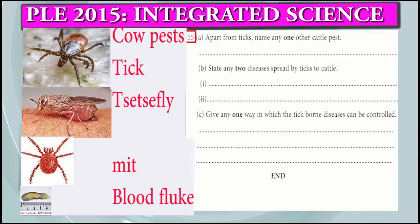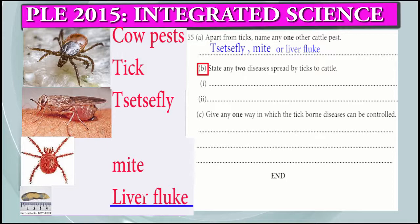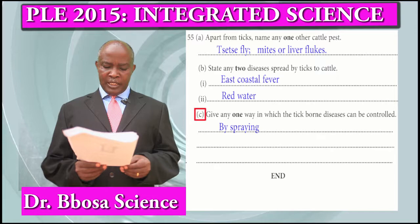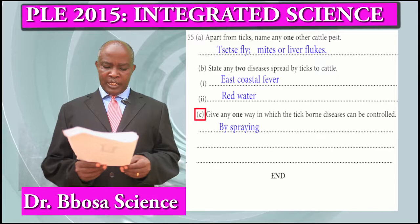Question 55a: Apart from ticks, name another cattle pest. Mites or liver flukes. Part B: State two diseases spread by ticks to cattle. That is East Coast Fever and Red Water. Part C: Give one way in which tick-borne diseases can be controlled. By spraying or dipping cattle. By rotational grazing. Thank you very much — look for another revision paper in Science, English, and Math.